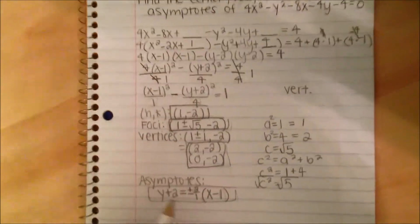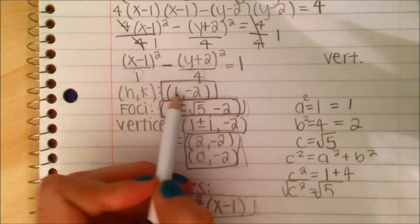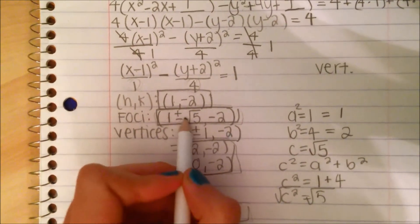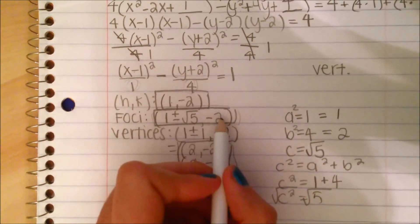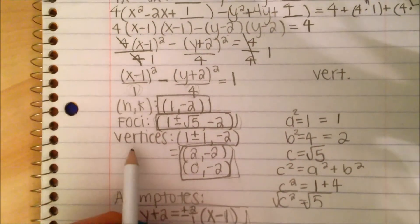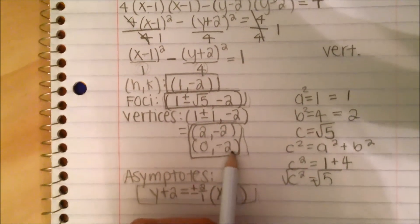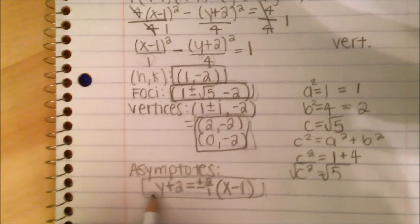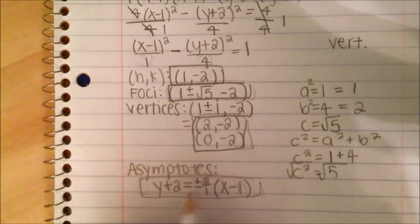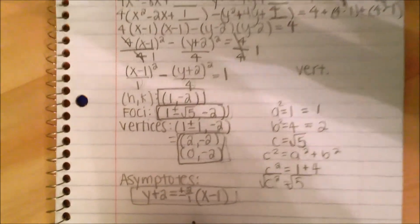So now we have found all the answers. The center is (1, negative 2). The foci are (1 plus square root of 5, negative 2) and (1 minus square root of 5, negative 2). The vertices are (2, negative 2) and (0, negative 2). The asymptotes are y plus 2 equals plus or minus 2 times (x minus 1). There you go — you have completed number 9.